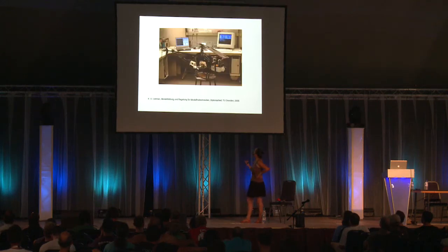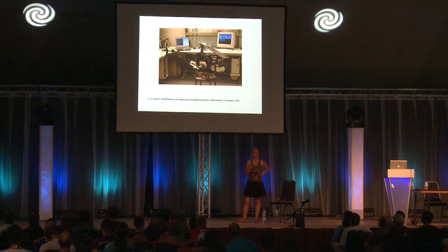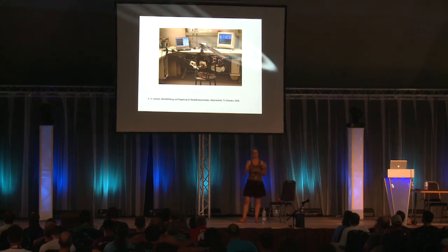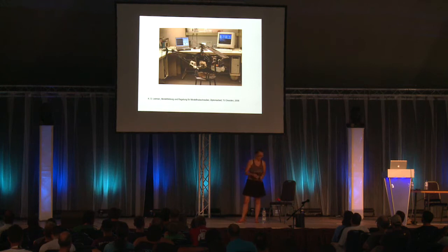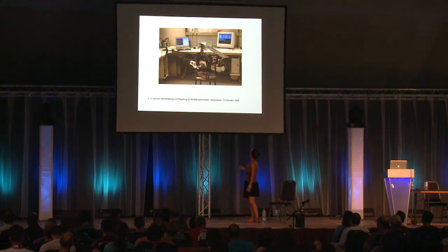The video we just saw featured a Bergen industrial twin — that's a small-scale helicopter. The quadrocopters flying around here are called micro-scale helicopters; they're pretty light and have different properties compared to this one, which is basically a small version of a real helicopter. It already has a flybar stabilizer on top, giving it pretty neat properties we will discuss later.